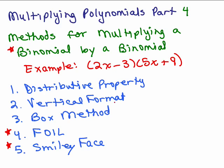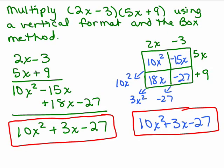In the previous video we ended with doing this problem: 2x minus 3 times 5x plus 9. We did it in a vertical format and a box method, so let's look back at that. We did 2x minus 3 times 5x plus 9 in a vertical format and then the box method. Our answer was 10x squared plus 3x minus 27.